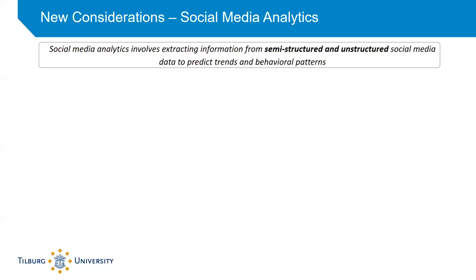The second new consideration is social media analytics, which involves extracting information from semi-structured and unstructured social media data to predict trends and behavioral patterns. Structured data is very predictable — the best example is tabular data in Excel sheets, where column headers define what each column comprises and row headers give information about each sample. In contrast, unstructured data does not have this nice tabular format and could be text, speech, or content organized in various unpredictable ways.